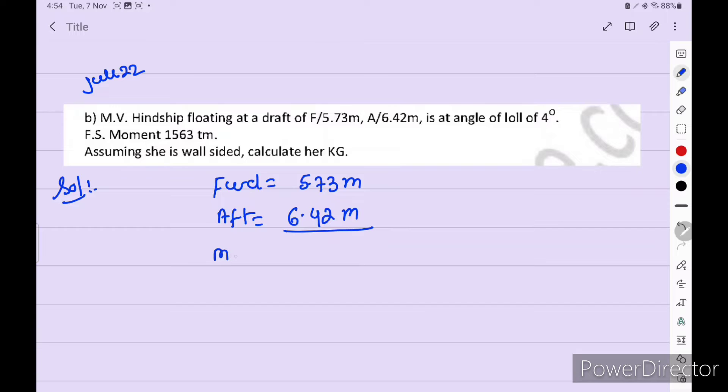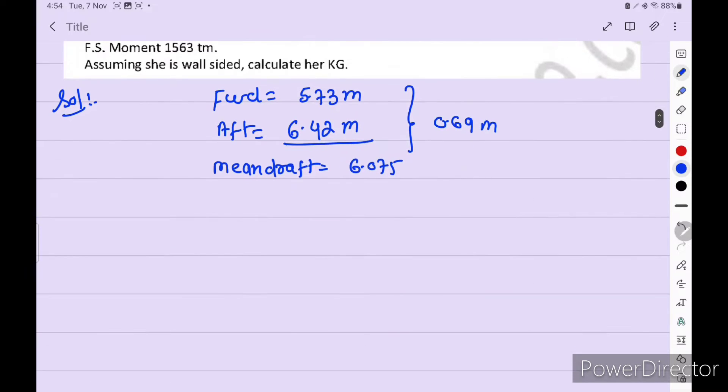Now we have to calculate mean draft. 6.075. So we add and divide by 2. And then we have the trim. 0.69. Trim by stern. So shift particular. From mean draft, 6.075, we check the LCF. So 72.422 meters is our LCF.